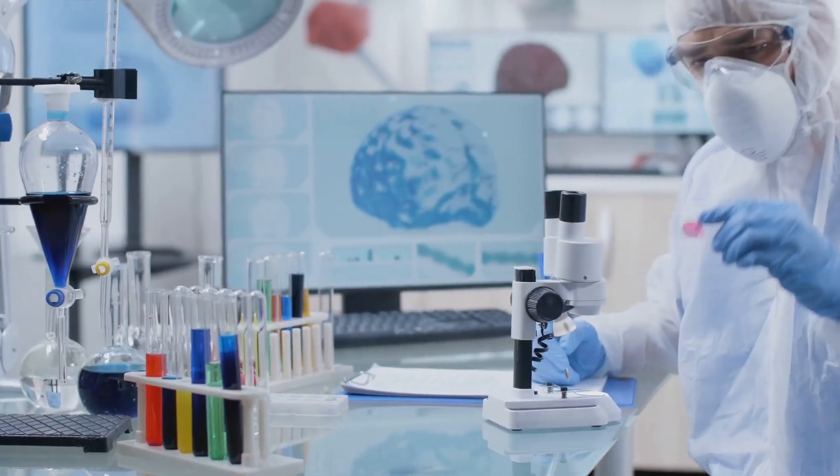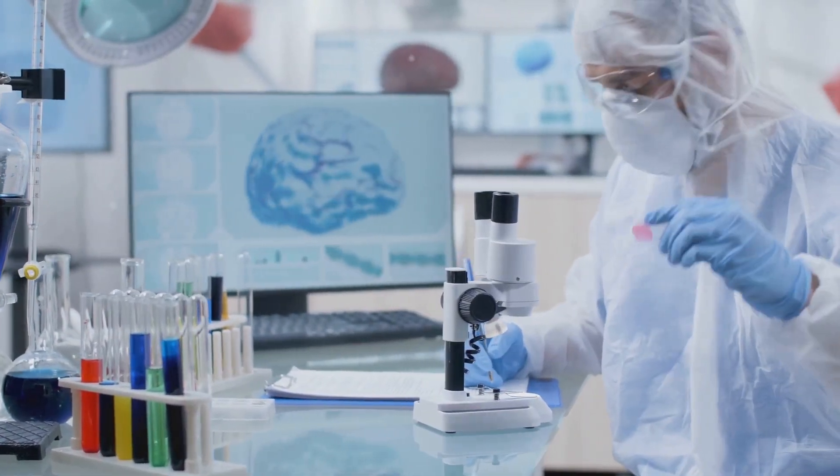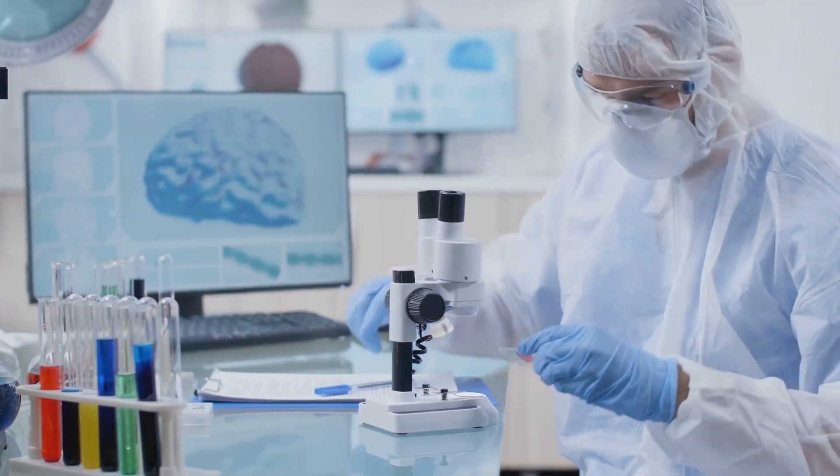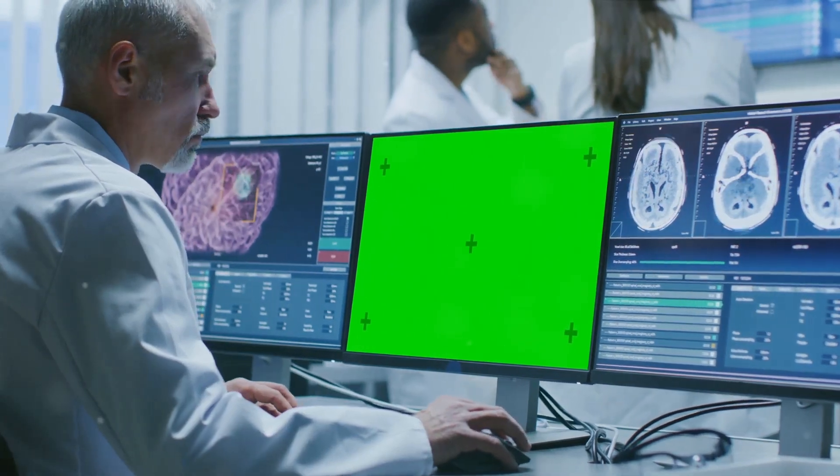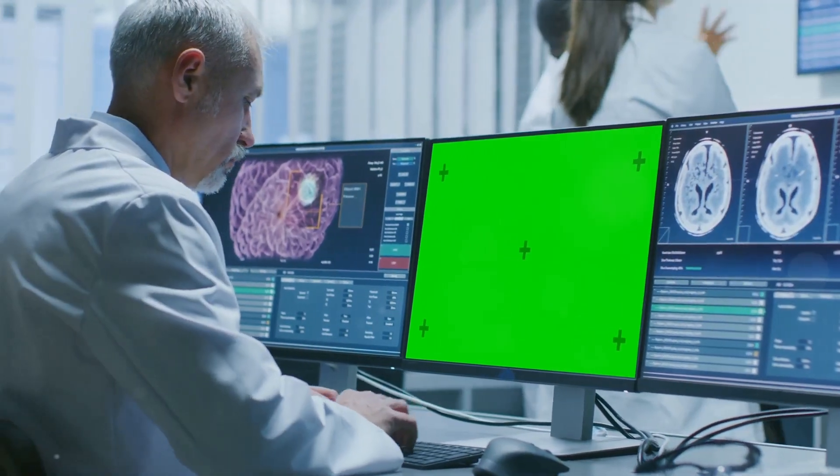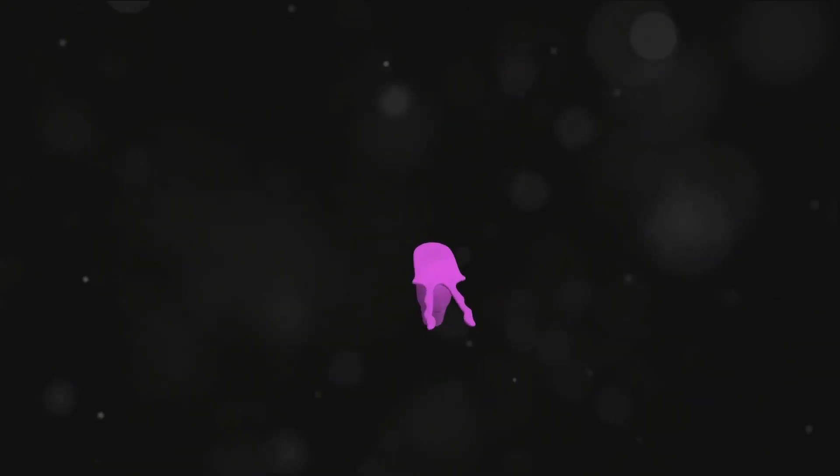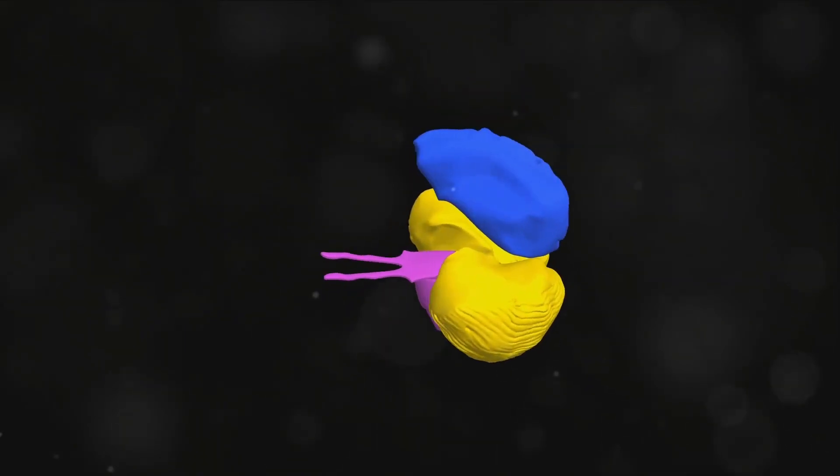The journey doesn't stop here. There are still countless mysteries to uncover about our brains. The recent breakthroughs in brain science are just the beginning. The detailed atlas of human brain cells paves the way for a better understanding of brain development, aging, and disease. It's like we've been handed a roadmap guiding us through the intricate landscape of the human brain. But what does this mean for the future?